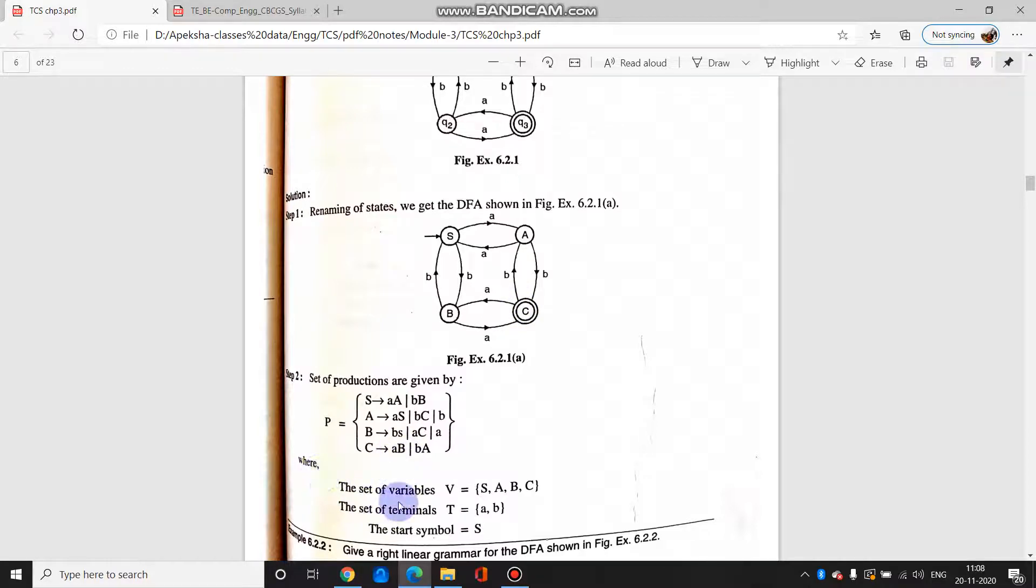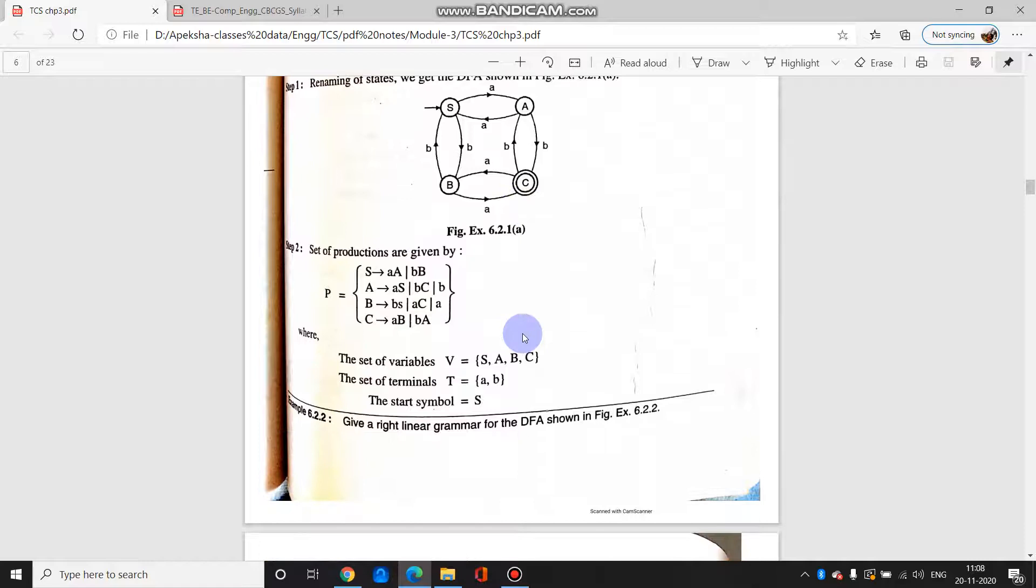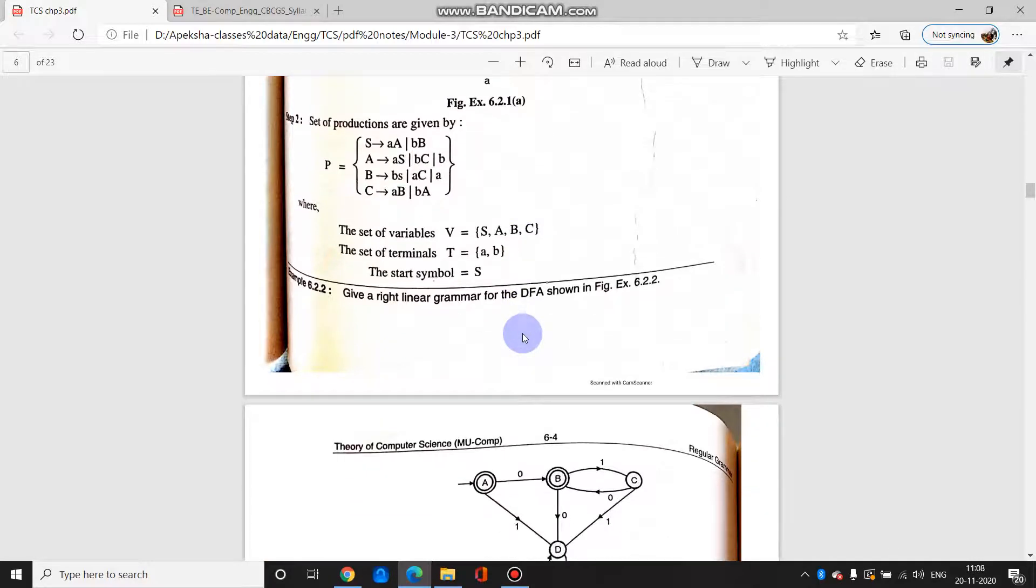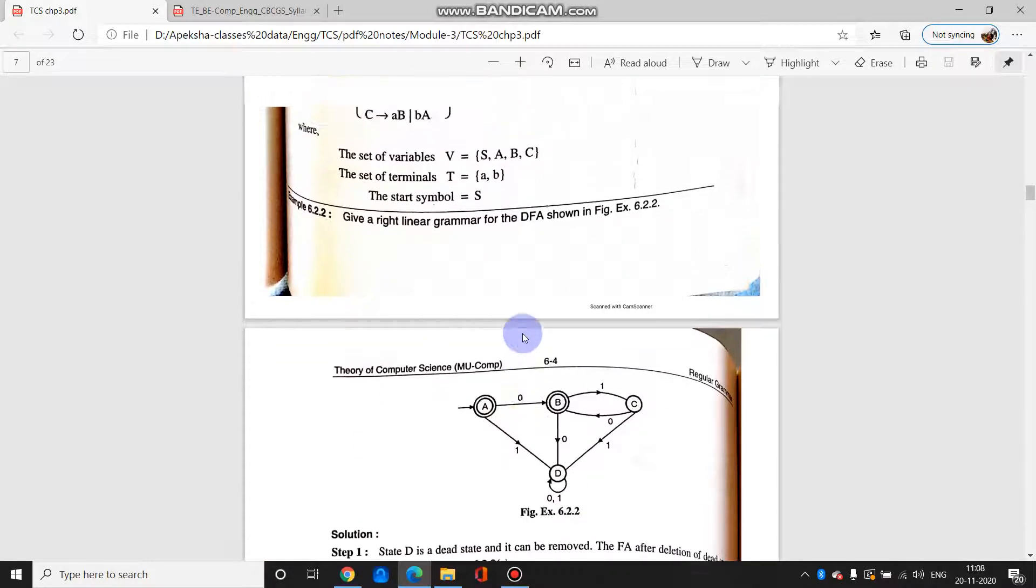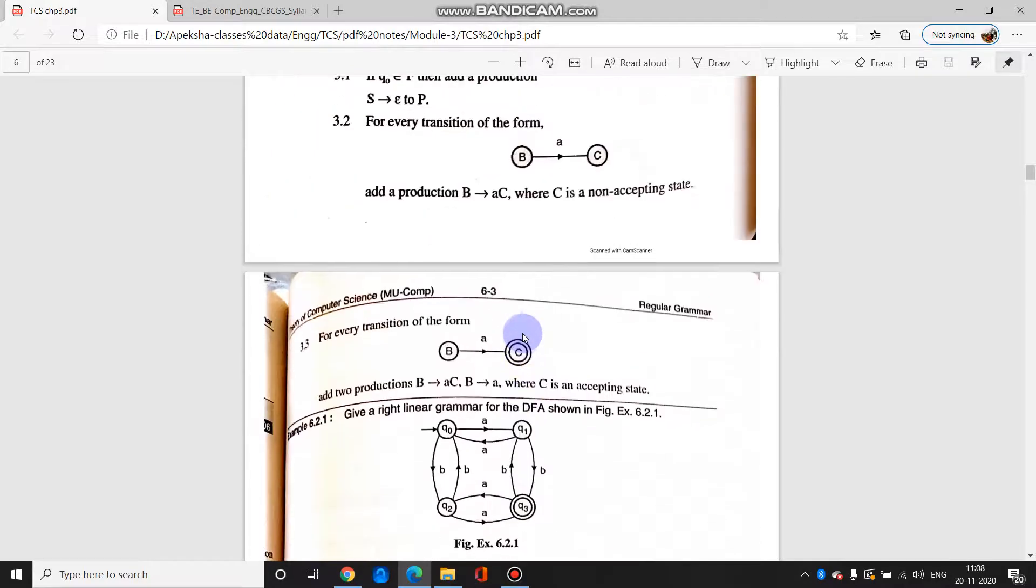And similarly for c, for a we are having b a, so that is b a. It is having a b, so it is also having a b. The set of variables are s, a, b, c. The set of terminal symbols are a and b. The start symbol is s. So this is how you are converting a DFA to your right linear grammar.